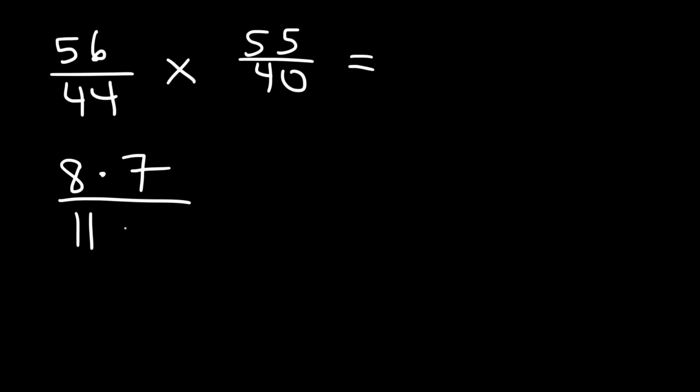So now it's your turn. Try this: 56 over 44 times 55 over 40. Go ahead and multiply these two fractions. So let's not multiply 56 by 55. Let's avoid that. 56 we can write that as 8 times 7. 44 is 11 times 4. And 55 is 11 times 5. 40 is 8 times 5.